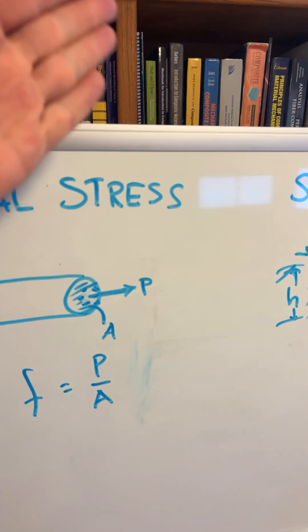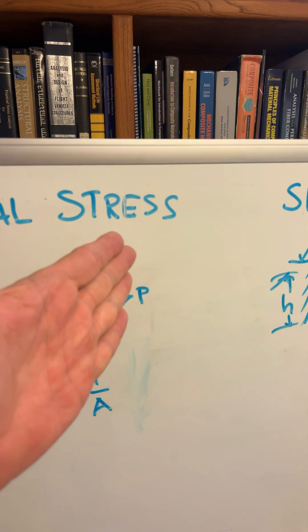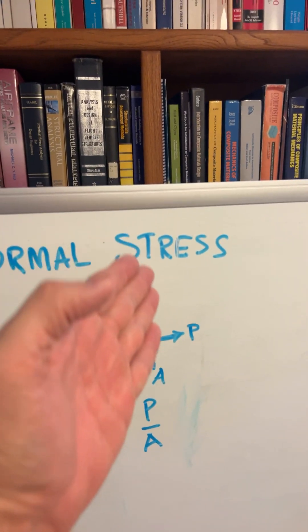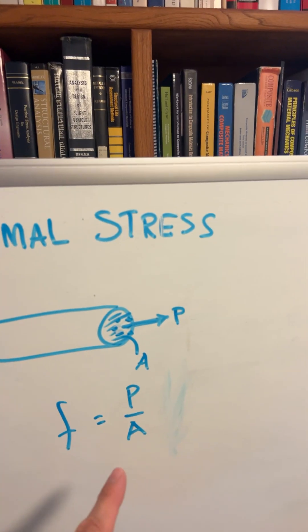If we take that force and take a cross-sectional area perpendicular to the force, then the stress on that area that we cut is P over A.